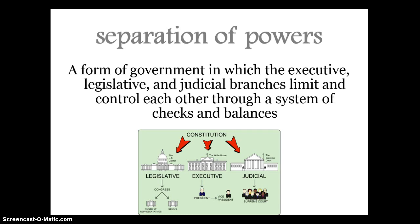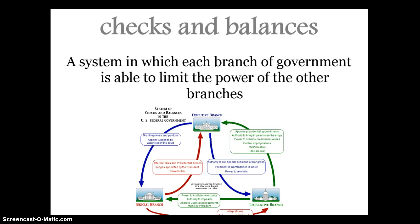Separation of powers: we're going to start getting into politics and government building. It's a form of government in which the executive, legislative, and judicial branches limit and control each other through a system of checks and balances — which should sound pretty familiar from United States history or government class. Checks and balances is a system in which each branch of government is able to limit the power of the other branches, exactly the same kind of system we have set up here in the United States.